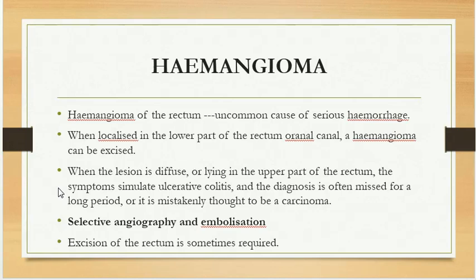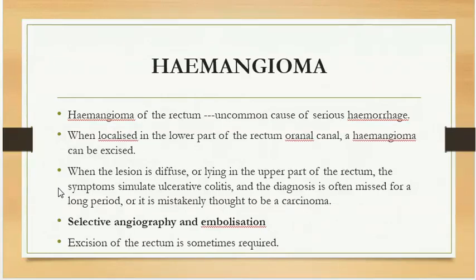Another benign tumour is haemangioma of the rectum, an uncommon cause of serious haemorrhage. When localised in the lower rectum or anal canal, it can be excised easily. When the lesion is diffuse or in the upper rectum, the symptoms simulate ulcerative colitis and the diagnosis is often missed or mistakenly thought to be carcinoma. Treatment includes selective angiography and embolisation, which also supports diagnosis. Excision of the rectum is rarely required.